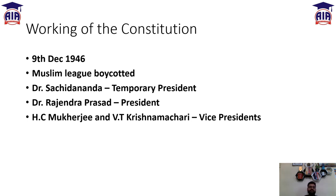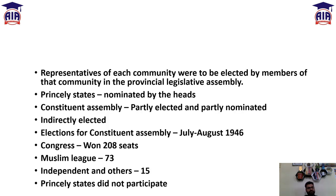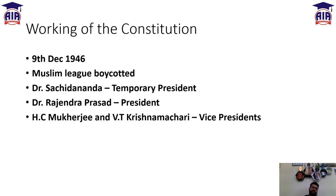The Muslim League boycotted the first meeting of the Constituent Assembly. The Muslim League and small parties had won around 15 seats, but the independents among them supported Congress. Congress was already in majority. The Muslim League thought that if they participated, the dominance of Congress would prevail. That is the reason they boycotted the meetings of the Constituent Assembly.